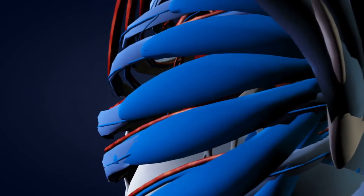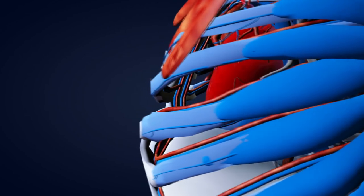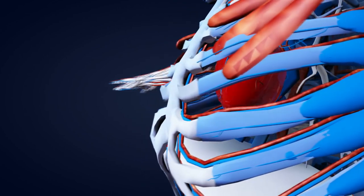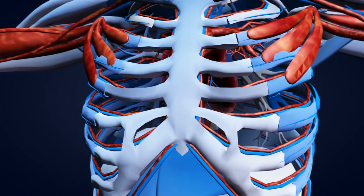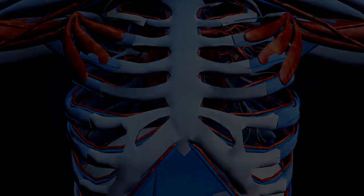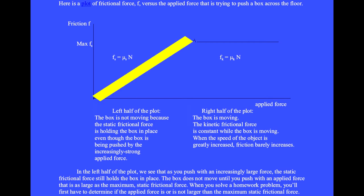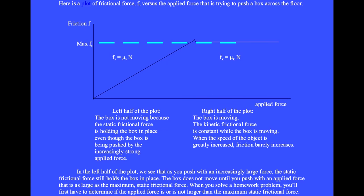Friction in biological systems occurs as moving bones, lungs, and hearts scrape past adjacent material. Bone growth may occur through a piezoelectric effect, in which the more the bones are squeezed by forces, the more rapidly growth will occur. Here is a plot of the frictional force versus the applied force trying to push a box across the floor. In the left half of the plot, the box is not moving because the static frictional force holds the box in place even though the applied force is increasingly strong. The box does not move until the applied force reaches the maximum static frictional force. After that, the box is in motion and the kinetic frictional force is constant.